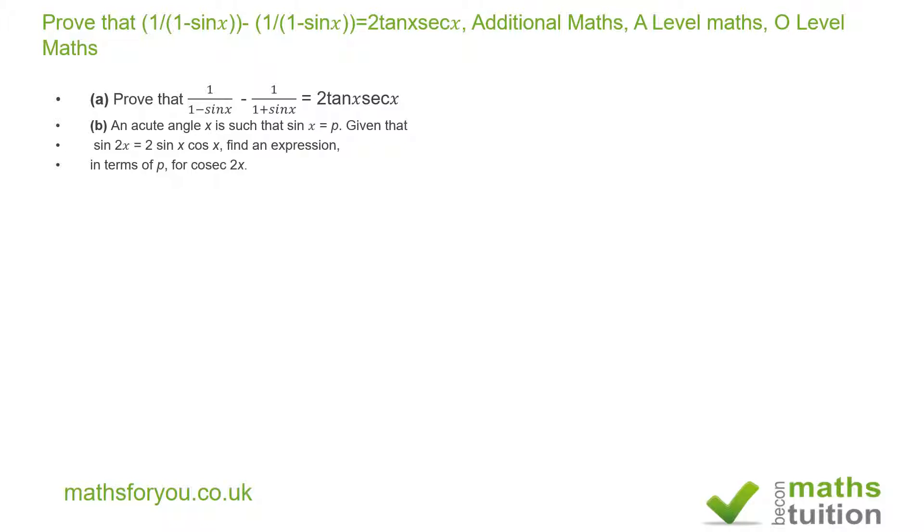Now for part a, 1 over 1 minus sin x minus 1 over 1 plus sin x. The common denominator for 1 minus sin x and 1 plus sin x would be 1 minus sin x multiplied by 1 plus sin x. That gives us 1 squared minus sin squared x.